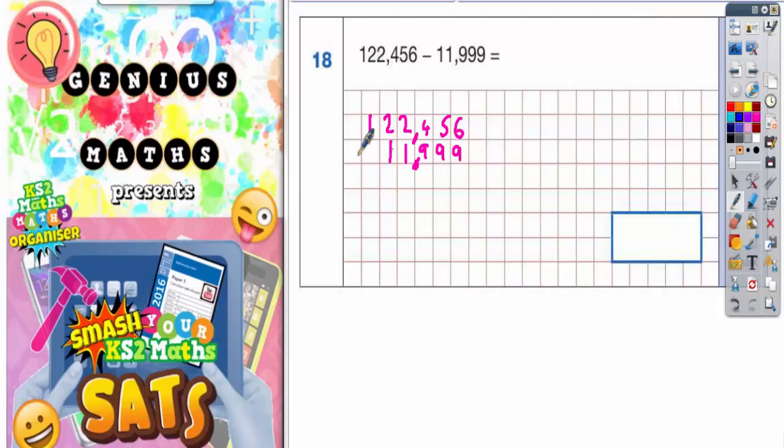So now we're ready to do this takeaway. So let's have a look at what we get. 6 takeaway 9 we can't do so we need to borrow one. So we borrow from the 5 and that becomes 4 and the one we borrowed makes this 6 into 16. 16 takeaway 9 is 7.